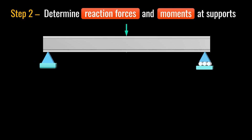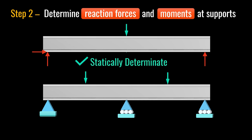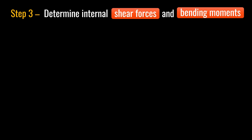If a structure can be solved using three equilibrium equations, it is called a statically determinate structure — meaning the number of unknown reactions equals the number of equilibrium equations. When a beam has more than three unknown reactions, it cannot be solved this way and is called a statically indeterminate structure. More complex methods such as force and displacement methods are required, and structural analysis software is typically used. In this video, the focus is only on statically determinate beams.